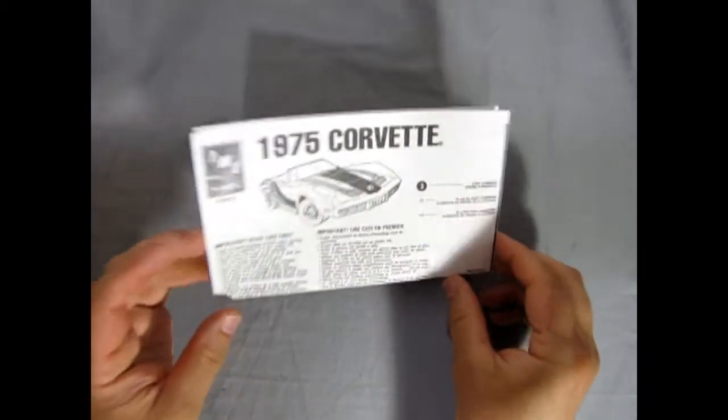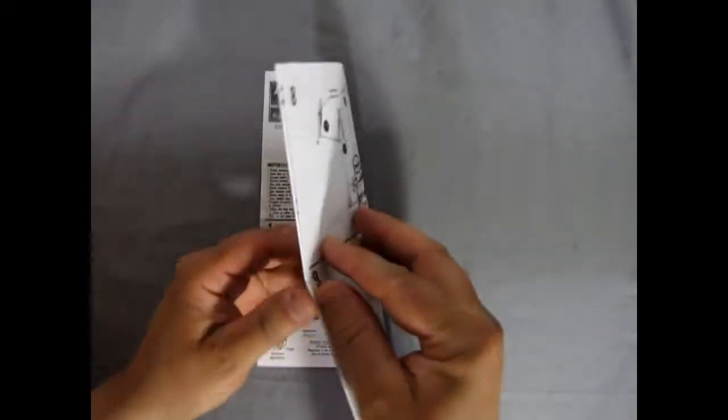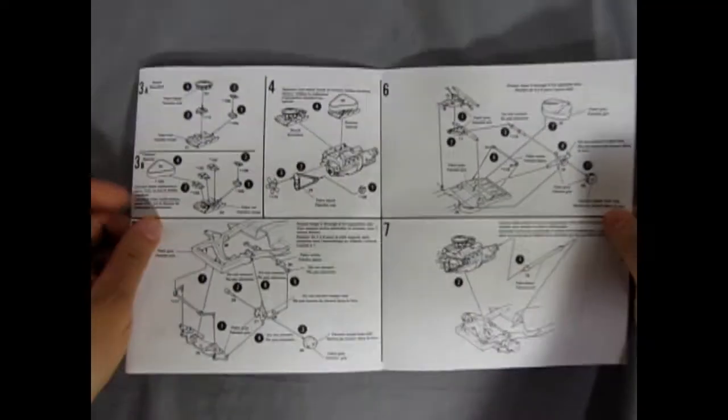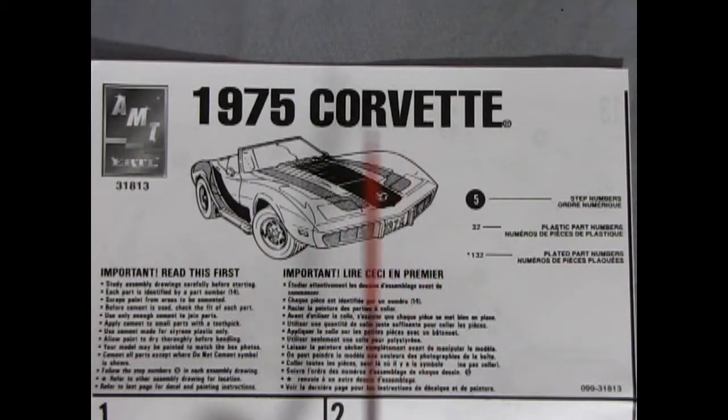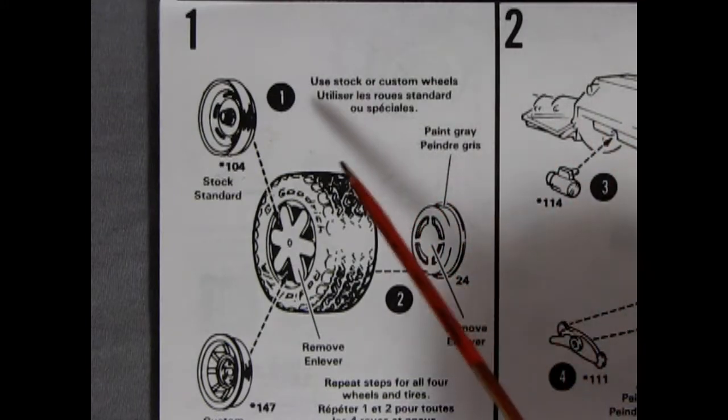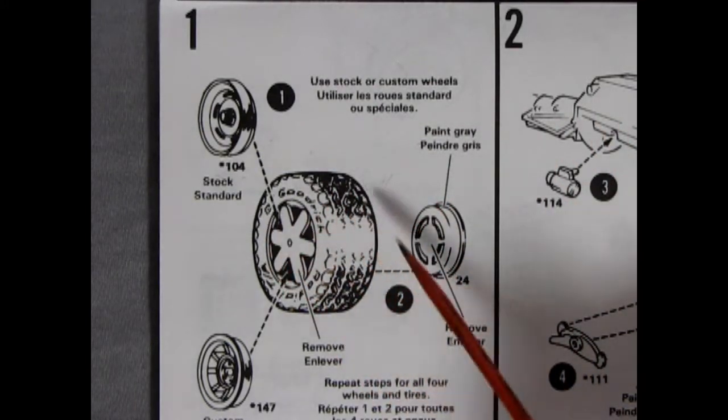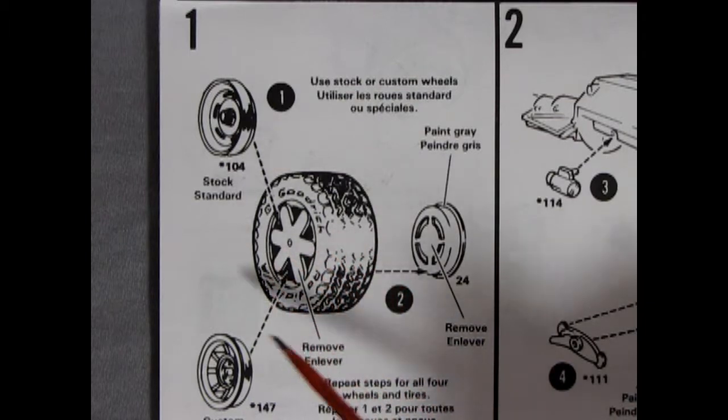Our model kit instructions are the fold-out map style which comes out pretty long on your hobby bench. And to begin our instruction sheet we have this nice illustration of the 1975 Corvette decked out with a whole bunch of 70s style graphics. Our tire choice is very 1970s with these BF Goodrich radial TAs. Quite a popular tire of the era.